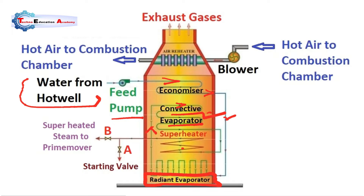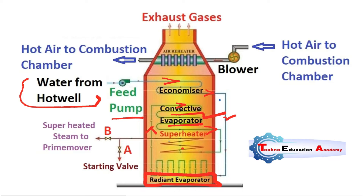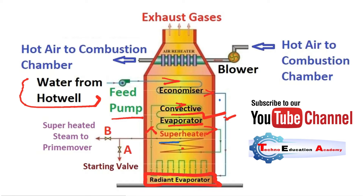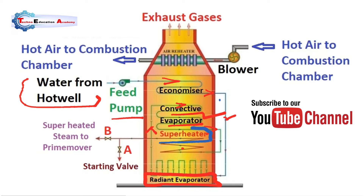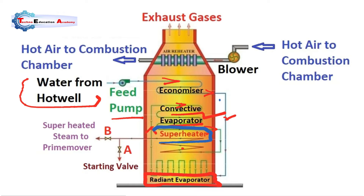The saturated high pressure steam at 225 bar is further passed through the superheater as shown in the figure. In the radiant evaporator, maximum water is converted into steam; the remaining water is converted in the convective evaporator. Finally it passes through the superheater, which converts steam into superheated steam. Superheated steam behaves like a gas with no moisture content, increasing the life of turbine components. The superheater is connected with the turbine.